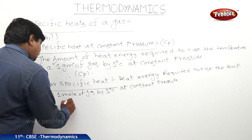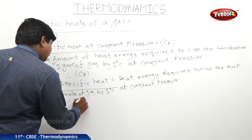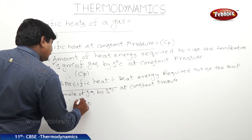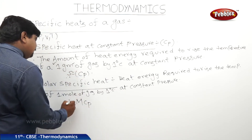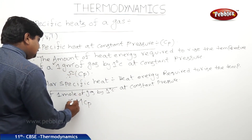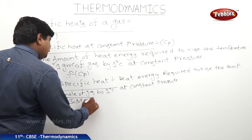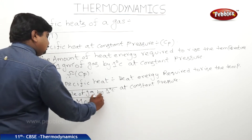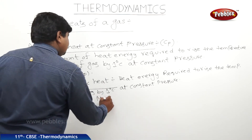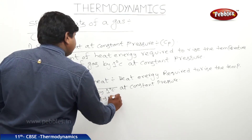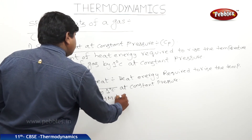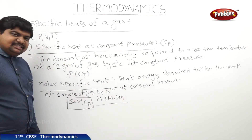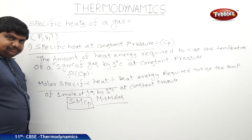This is also represented as: S is equal to Cp for specific heat, and S is equal to M into Cp for molar specific heat, where M is equal to number of moles and Cp refers to constant pressure.